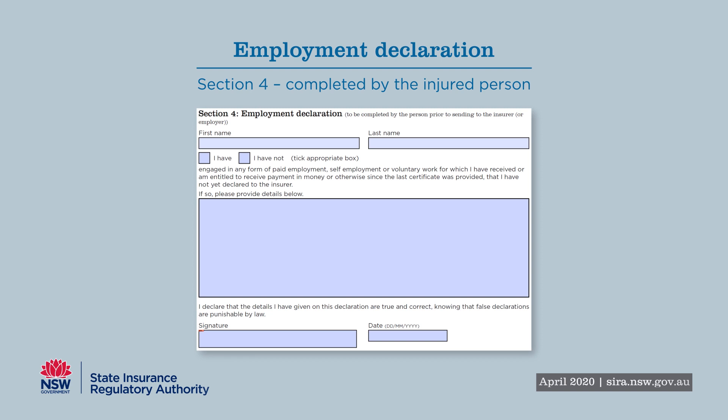You do not complete this section. Section 4 is a declaration completed by the person prior to sending the certificate to the insurer or employer, noting whether they have engaged in any paid employment since the last certificate was submitted and have not yet declared it to the insurer.